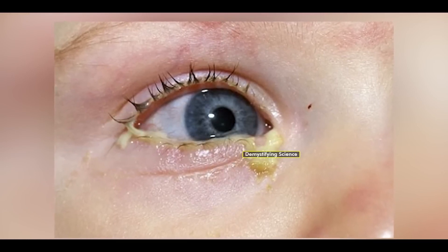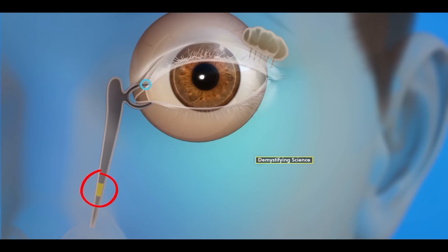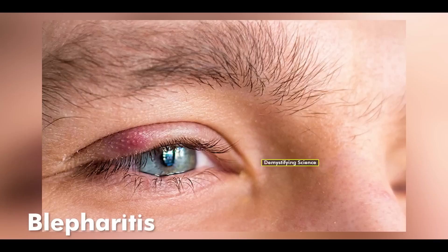Eye boogers are a normal condition, but some factors can make them more noticeable or change their color. These factors include dry eyes, blockage of tear ducts, conjunctivitis and blepharitis.